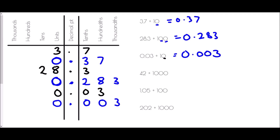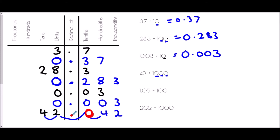For 42 divided by 1000 — three zeros, so three places to the right — the 4 in tens moves to hundredths and the 2 in units moves to thousandths. We need a zero placeholder in the tenths, a decimal point, and a leading zero: answer is 0.042.